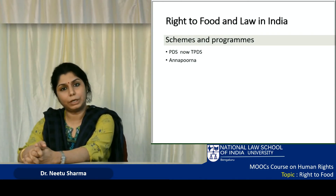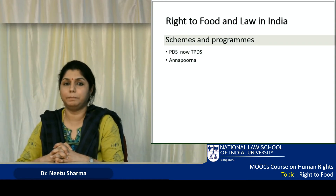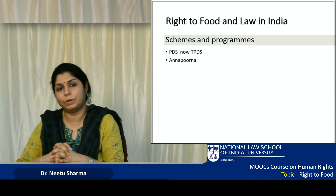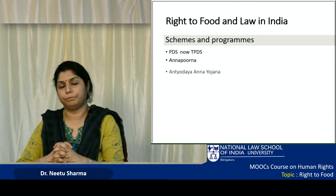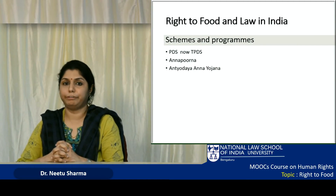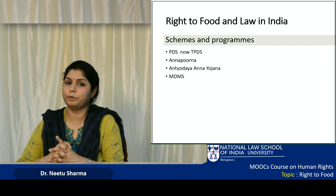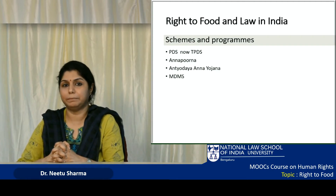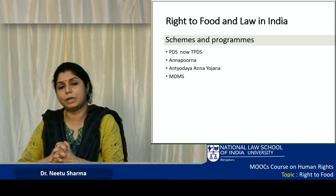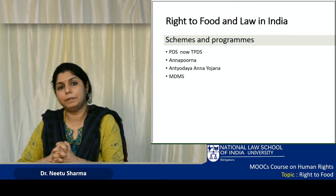In addition to PDS, there are other schemes focused on marginalized sections. The Antyodaya Anna Yojana is one such scheme that includes provision of 35 kg of grains per month to the poorest of the poor families. There are certain other schemes focused only on children — the Midday Meal Scheme means all children in government schools are entitled to get free meals every day while in school. The Integrated Child Development Scheme focuses on younger children and pregnant and lactating mothers, with provision for nutrition, early childhood education, immunization, health checkups, referrals, and counseling to adolescent girls and pregnant and lactating mothers.